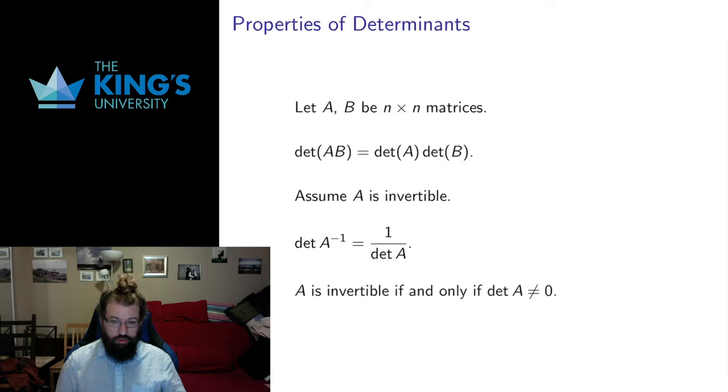First, if I have two n by n matrices I can multiply the two matrices together. Matrix multiplication encodes composition of transformation, so A times B means what happens if I do the transformation B and then the transformation A. The determinant says what's the effect on orientation and volume of that composition? Well the effect turns out to be the product of the two determinants.